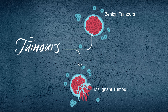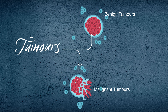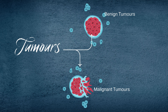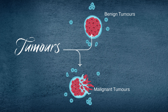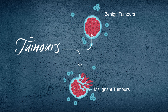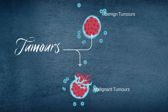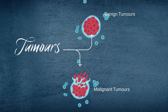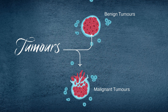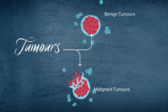A tumour is an abnormal growth of cells that forms when cells multiply uncontrollably. Benign tumours are non-cancerous and typically do not spread to other parts of the body. Malignant tumours, on the other hand, are cancerous and have the potential to invade nearby tissues and spread to distant parts of the body.